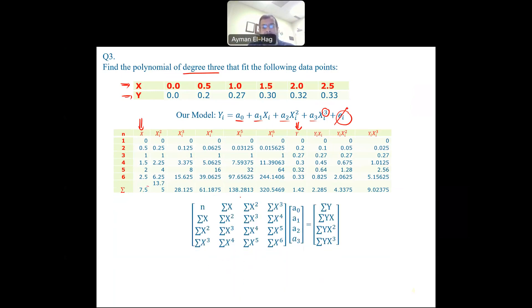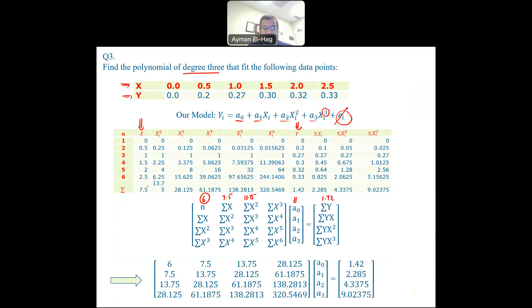This yields a 4x4 matrix because we have four variables: A0, A1, A2, and A3. The matrix starts with N = 6 (number of data points), summation of X = 7.5, summation of X² = 13.75, and so on. This equals the summation of Y = 1.42. All values come from the table and are placed into this matrix form — a 4x4 system to solve for A0, A1, A2, and A3.